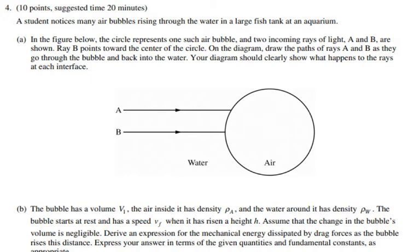Inside water, the bubbles of air have a different index of refraction, so the bubble behaves like a concave lens. Concave lenses are diverging lenses, and rays diverge after falling on a concave lens. The air bubble is a sphere with a convex surface. The refractive index of air is 1 and the refractive index of water is 1.33. Since water's refractive index is greater than air's, the air bubble behaves like a concave lens.